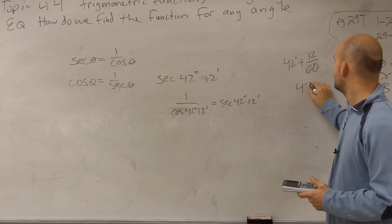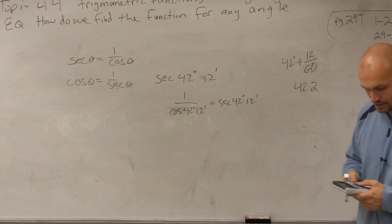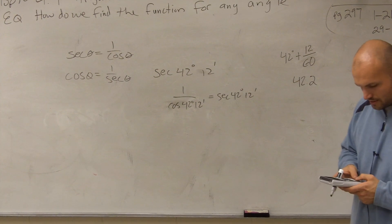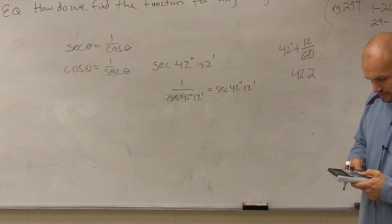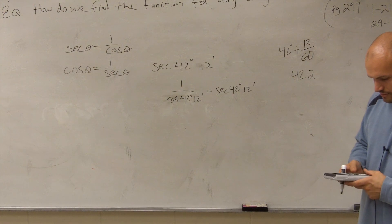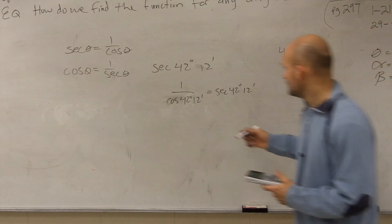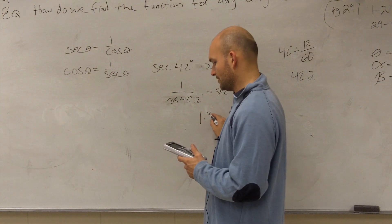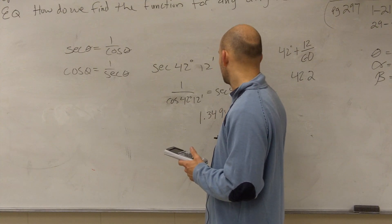So that's going to be 42.2. So I do 1 divided by the cosine of 42.2, which gives me 1.3498.